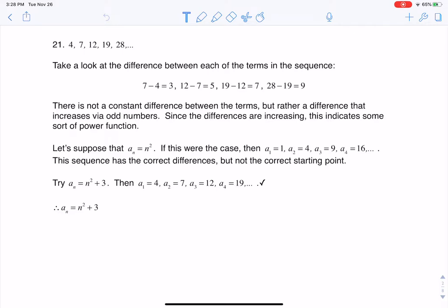Hey Math 31, I had a question coming out of section 9.1 number 21 where we were asked to write an explicit formula for this given sequence. So if I take a look at this, I need to come up with an explicit formula, which means I have to somehow map the number 1 to 4, the number 2 to 7, the number 3 to 12, and so on and so forth.